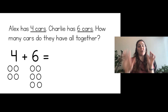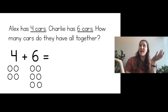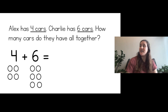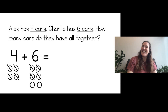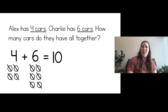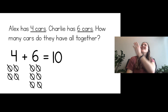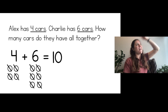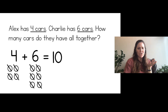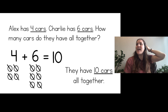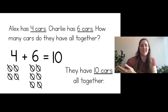Alex has four cars, Charlie has six cars. How many do they have all together? I will count all the circles: one, two, three, four, five, six, seven, eight, nine, ten. Four plus six equals ten. So if I ask myself the question again — how many cars do they have all together? — they have ten cars all together.